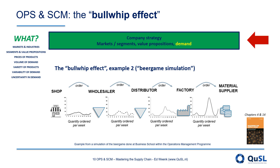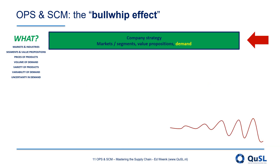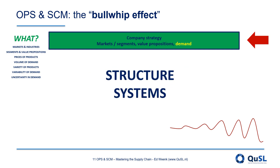There are very diverse causes for which the bullwhip effect occurs. Some have to do with the structure of supply chains, some have to do with the way our systems are programmed, and some have to do with human behavior.